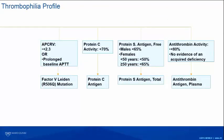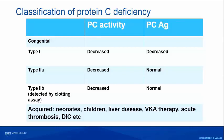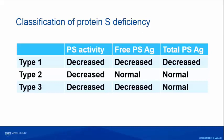Protein C activity is what we first do to detect protein C deficiency, and we do the protein C antigen primarily to classify. It's a chromogenic assay. Type 1 deficiency shows decreased activity and antigen. Type 2 is a dysfunctional protein where activity is disproportionately decreased compared to antigen. For protein S, our algorithm does free antigen first, then total, and very rarely the S activity — and I'll explain why.